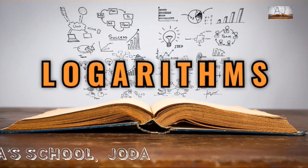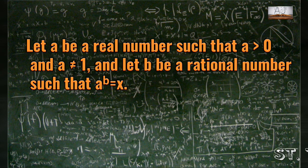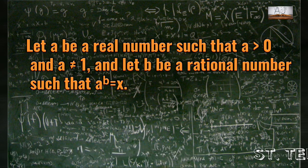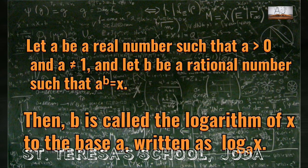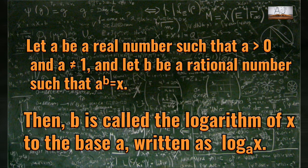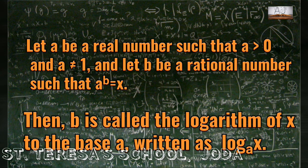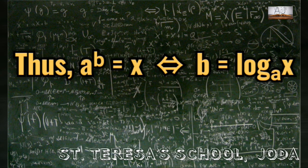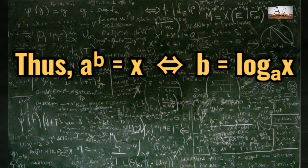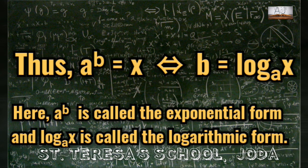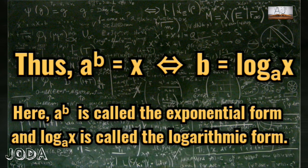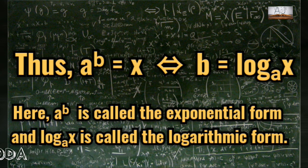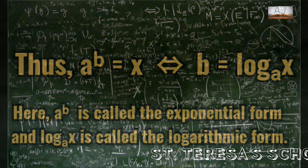Hello students, let us see the chapter Logarithms. Let us define it first. Let a be a real number such that a is greater than 0 and a is not equal to 1, and let b be a rational number such that a to the power b equals x. Then b is called the logarithm of x to the base a, written as log x with base a. So a to the power b equals x implies b equals log base a of x. Here, a to the power b is called the exponential form, and log base a of x is called the logarithmic form.